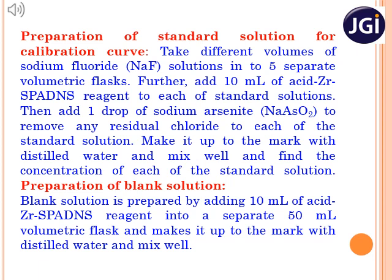To each of the flasks, 10 ml of acidic zirconium SPADNS reagent is added, which was prepared in the previous step. To remove the chloride ions, one drop of sodium arsenite is added to each flask. Then distilled water is added up to the mark and mixed well for uniform concentration.